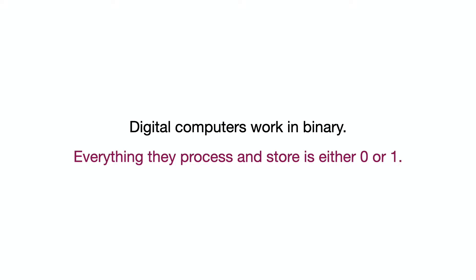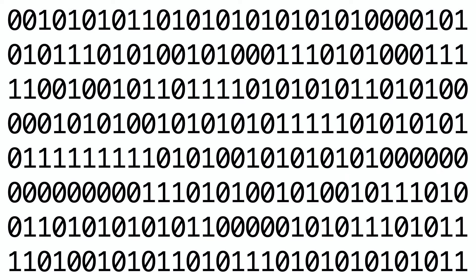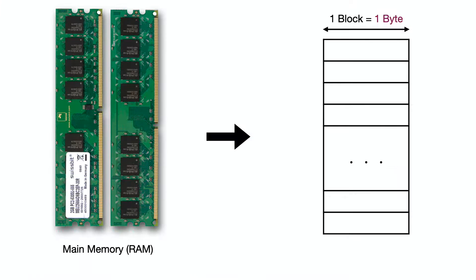At the lowest level, a computer stores everything in binary — either 0 or 1. A binary bit is the basic unit. A group of 8 bits makes a byte. This is how memory is organized in RAM.